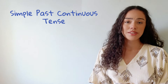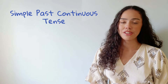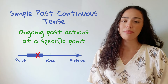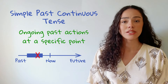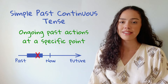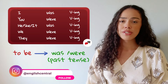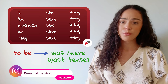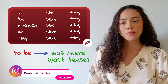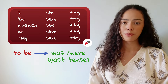First, let's describe what simple past continuous tense is. It is used to describe actions that were in progress at a certain point in the past. It is formed by using the past tense of the verb to be — was, were — followed by the ing version of the main verb.